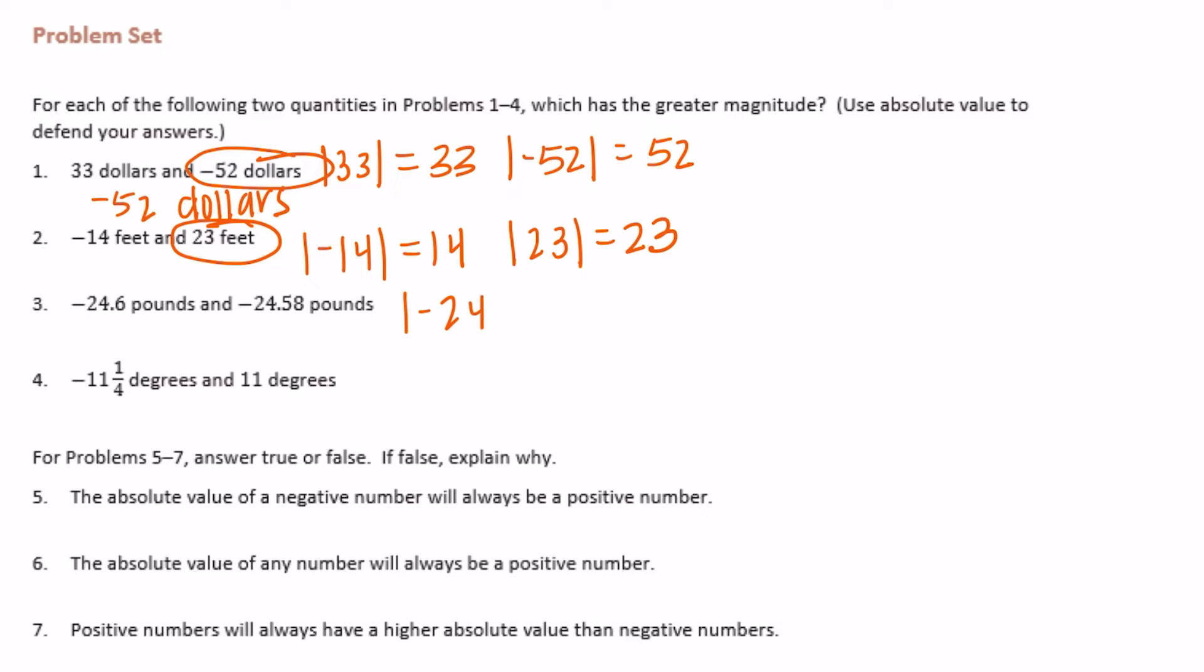Negative 24.6 pounds. The absolute value of that is 24.6. And absolute value of negative 24.58 pounds would be equal to 24.58 pounds. So which is larger? I'm going to put a 0 there to make it easier to compare. Well, 24.60 pounds would be further from 0 than 24.58 hundredths.